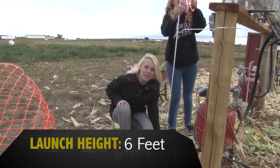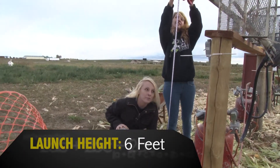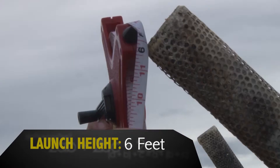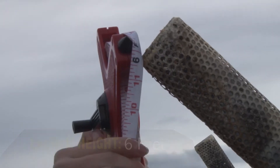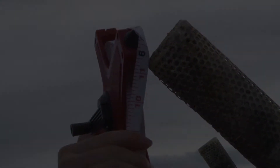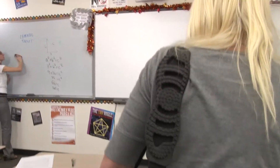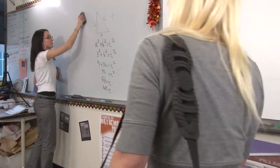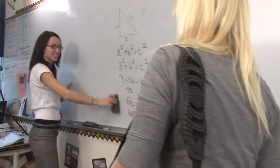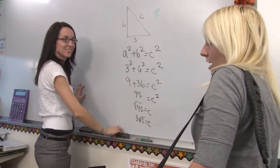Now we're measuring the height of the initial launch. Hi Ms. Lagel. We have some footage of some corn being shot out of a corn cannon. I was wondering if you could help us find a quadratic equation so we can see how high the corn went. Absolutely! Let's go take a look at the footage.